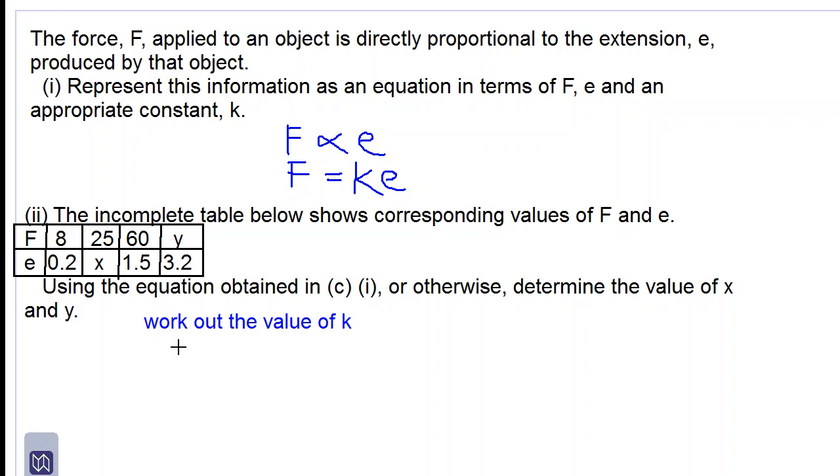Substituting values into our equation F = kE: when F equals 8, E equals 0.2. So we have 8 = k × 0.2.